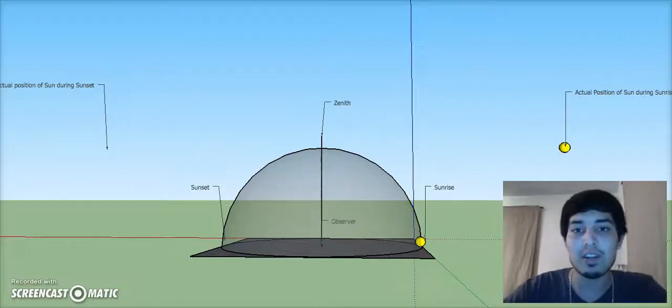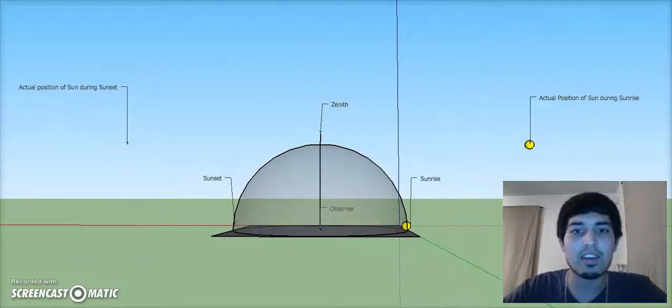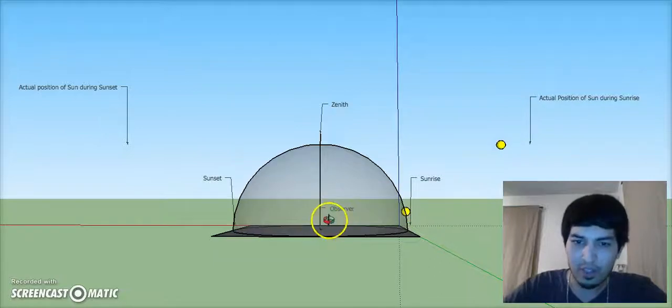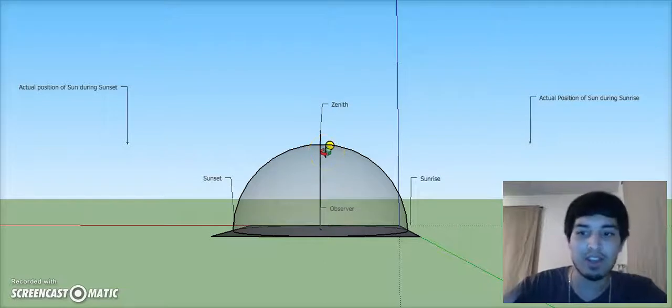Anyway, so here's the animation that I made with sunrises and sunsets. So here we go. We have our observer down here, and she is looking at the sun and watching it rise, reach zenith, which is the highest point overhead.